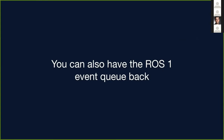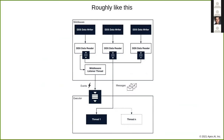You can also have the ROS1 event queue back, and this is exactly what Albatto presented. So then we have more like a listener approach. We register callbacks and the listeners right in the middleware will execute these callbacks. You can have an event queue again to queue these events, and the executor will then execute the related tasks.